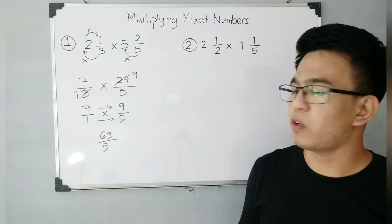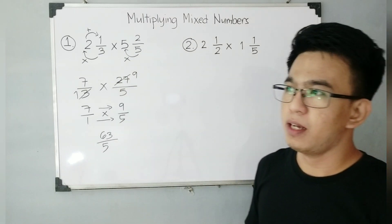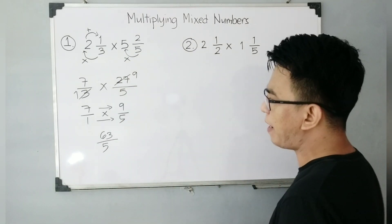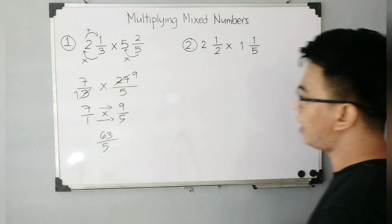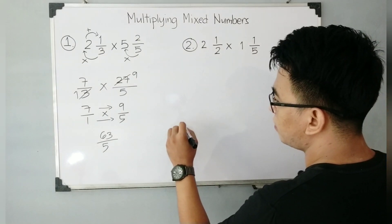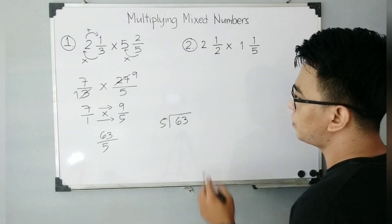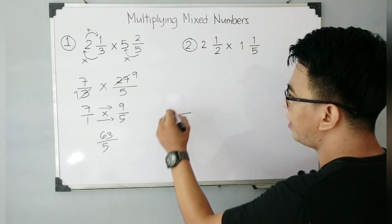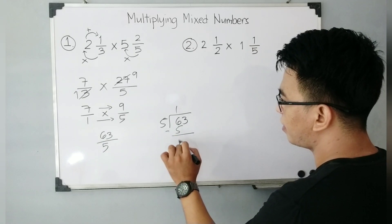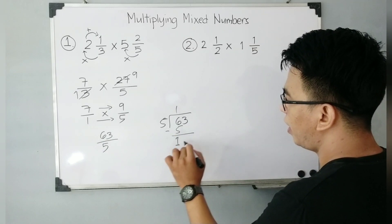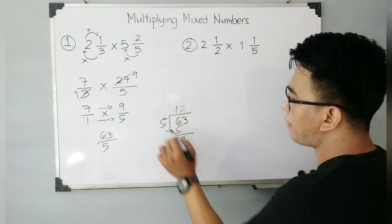What we need to do now is convert the improper fraction to a mixed number, because that is what is required for answers by your teachers. So how do we convert an improper fraction to a mixed number? We divide 63 by 5. So, 63 divided by 5: 6 divided by 5 is 1, 1 times 5 is 5, subtract — remainder is 1. Bring down the 3, giving us 13. 13 divided by 5 is 2, 2 times 5 is 10, and 13 minus 10 gives you 3.